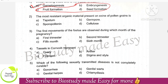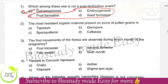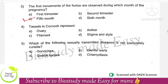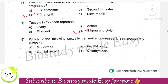The most resistant organic material present on the exine of pollen grains is option C, sporopollenin. Next, the first movements of the fetus are observed during which month of pregnancy — the right option is option C, the fifth month. Tassels in corn represent the right option: stigma and style.